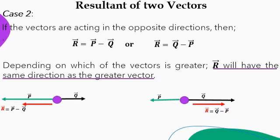So these are two simple cases: when two vectors act in the same direction, you simply add to get the resultant; when they are in opposite directions, you subtract and consider which vector is greater. We can extend this to more than two vectors — if you have three, four, or five vectors acting in opposite directions, all the ones acting in one direction are summed, all the ones acting in the opposite direction are summed, and then a subtraction is carried out.